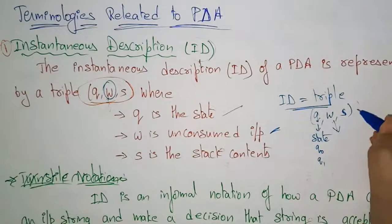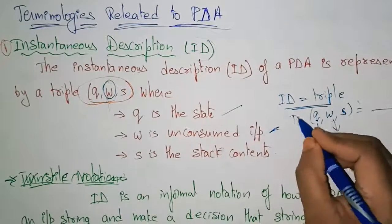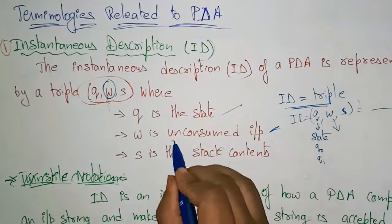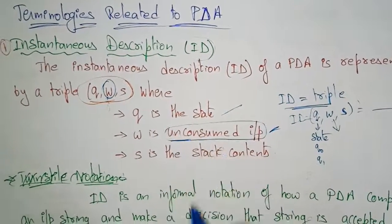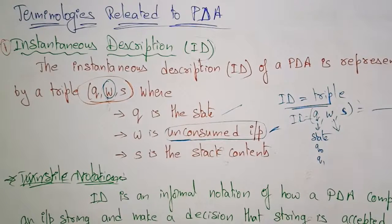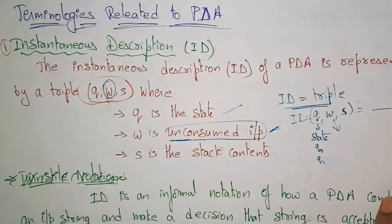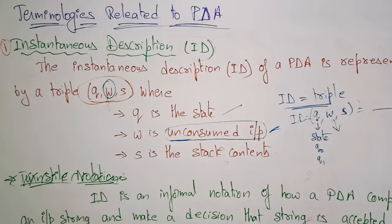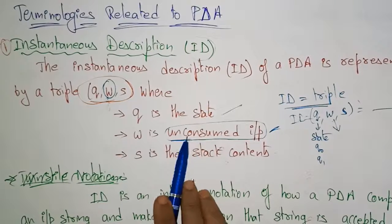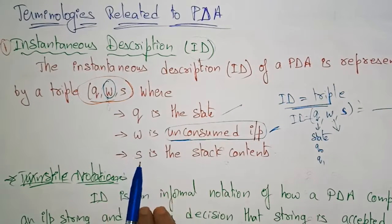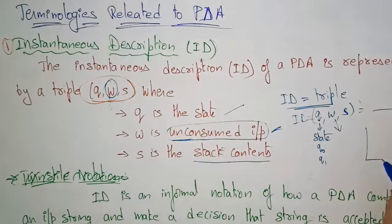Now coming to w — on the left-hand side you represent it in an ID. This w is nothing but the unconsumed input. Unconsumed input means the data that has not yet been read by the finite state machine — whatever data is present on the input tape. As seen in the previous diagram, the pushdown automata consists of three parts: the finite control unit, the stack, and the input tape. The input tape contains the unconsumed input, which is w.